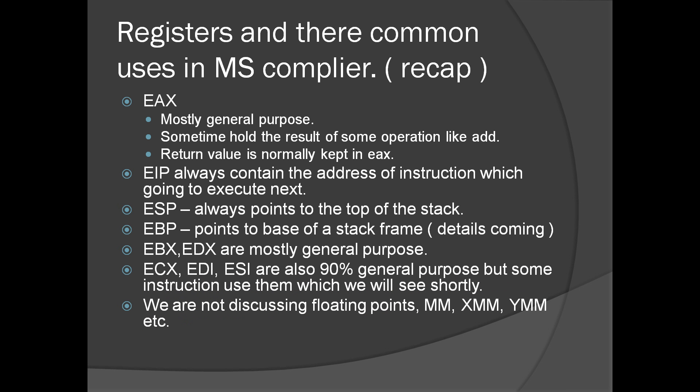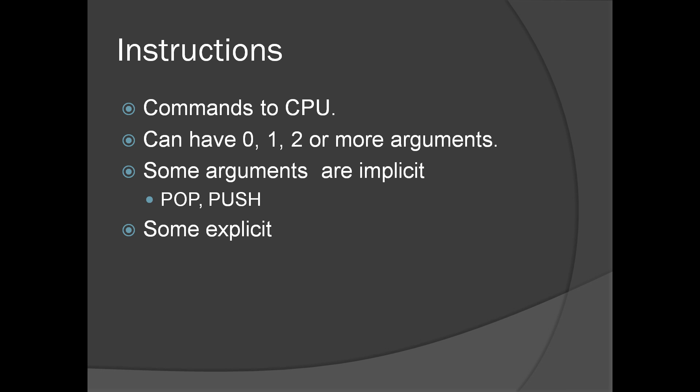Here is a quick recap from the previous presentation on assembly language. The EAX register is mostly general purpose and sometimes called the result register — return values are normally kept in EAX. EIP always contains the address of the next instruction to execute. ESP always points to the top of the stack, which we'll explain later. EBP points to the base of the stack frame. EBX and EDX are normally general purpose registers. ECX, EDI, and ESI are also mostly general purpose but some instructions use them for special purposes. We are not discussing floating point, MM, or XMM registers.